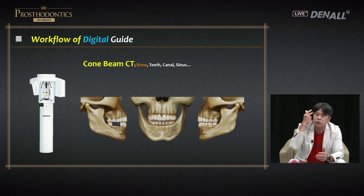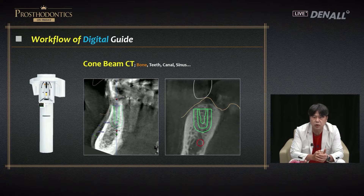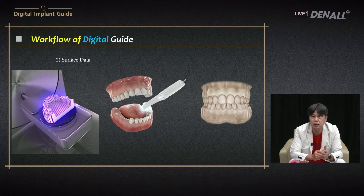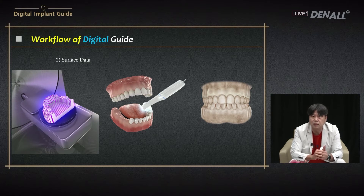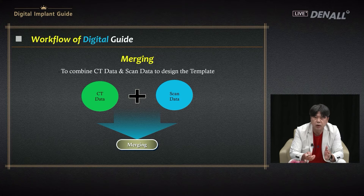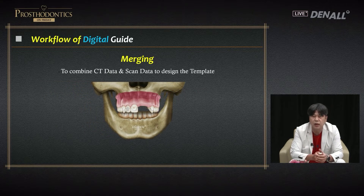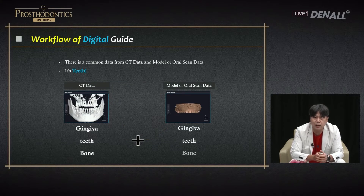In the past we used panorama, but CT is used to get three-dimensional data on bone, teeth, and anatomical structures like the nerve canal. On the CT data, soft tissue data is missing. To get accurate surface data, you can use a model scanner or intraoral scanner to capture teeth and gingiva. CT data needs to be merged with the scan data — in Korean, 병합. The CT data and scan data are combined together. On the CT data there is no gingival data, only teeth and bone. On the model data there is no bone data, only gingival and teeth data.